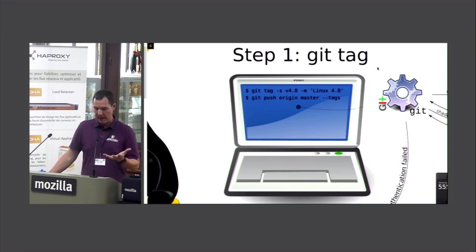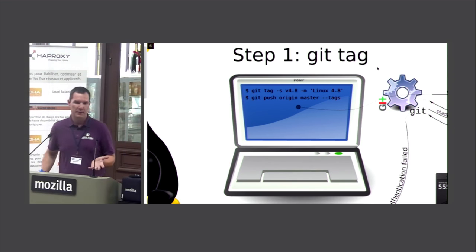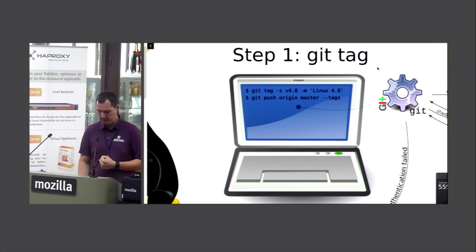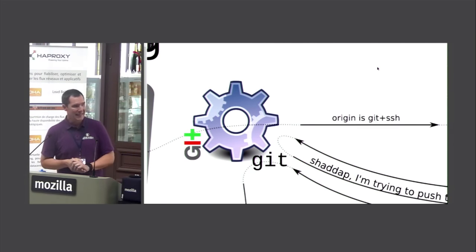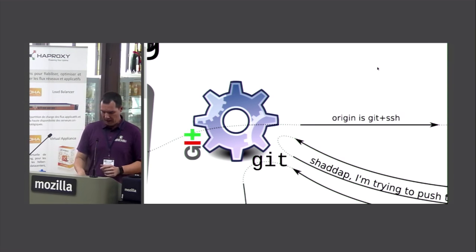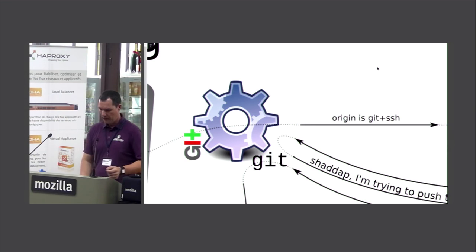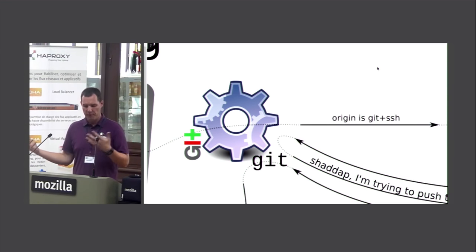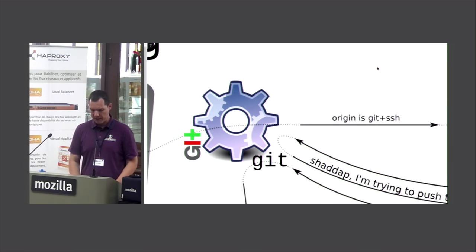Nothing actually happens until he pushes those tags. The next step is git push origin master --tags. Git is the tool used at kernel.org. 'Origin' is git+ssh to git.master.kernel.org. The first thing that needs to happen is establishing an SSH session from Linus's laptop to the kernel.org master git server.